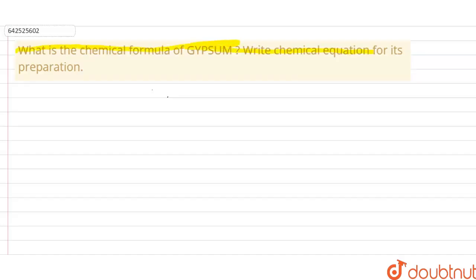What is the chemical formula of gypsum? Write the chemical equation for its preparation. In this question, we first have to write the chemical formula of gypsum, and secondly we have to write the chemical equation for its preparation.